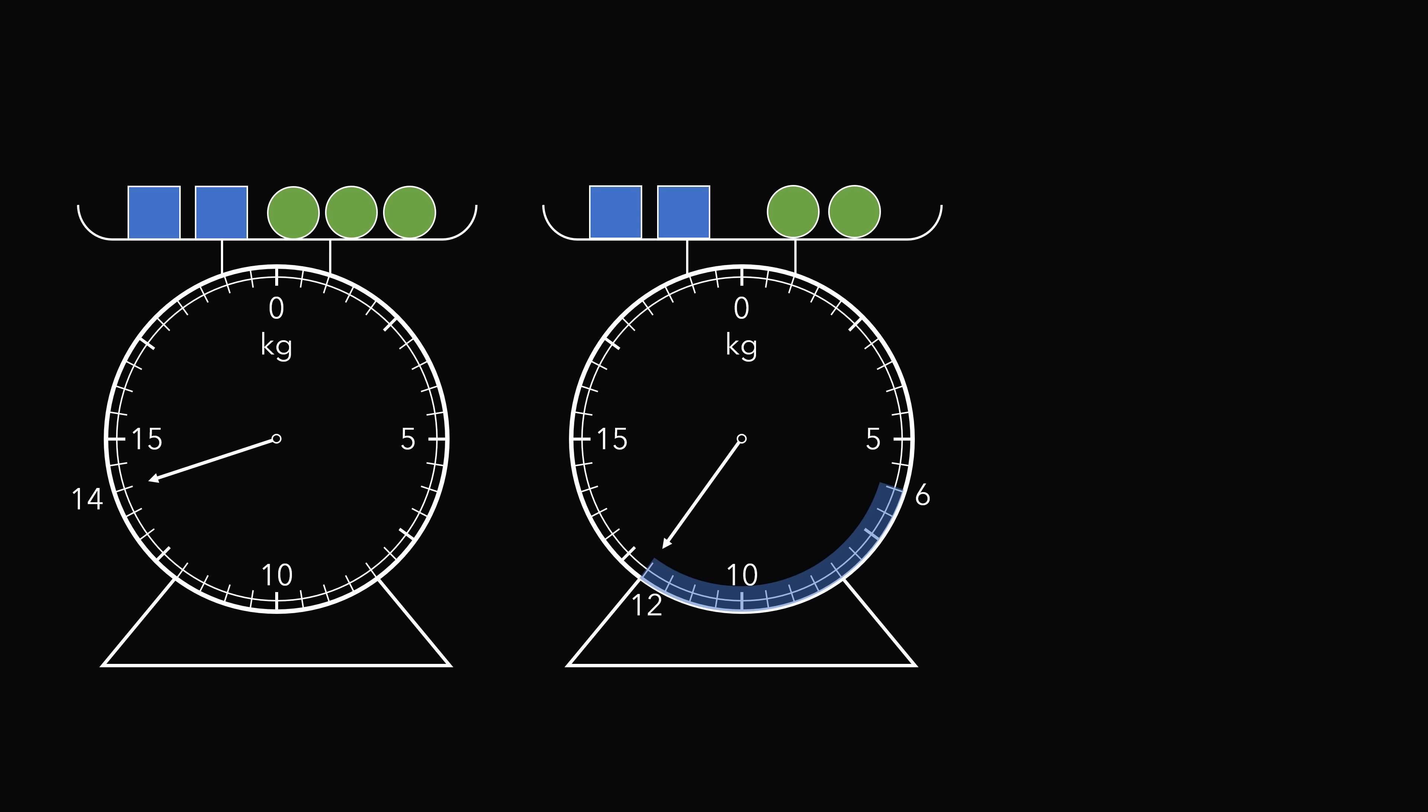Now compare the two scales. The scale on the left has two squares, and the scale on the right has two squares. So those two weights would cancel out. The scale on the left has three circles, and the scale on the right has only two circles. So the only difference in weight will be attributable to the weight of one circle.